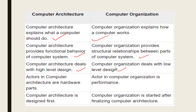Computer architecture deals with hardware parts — input, output, processing, and storage — and is related to performance. Computer organization is the low-level design that implements what is defined in computer architecture. So first comes computer architecture, and then computer organization implements it.